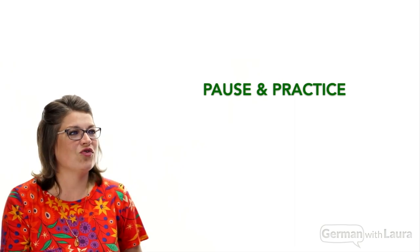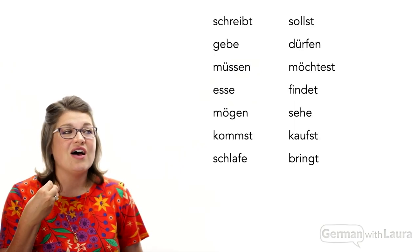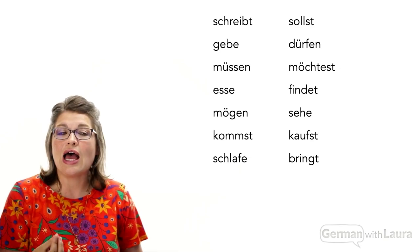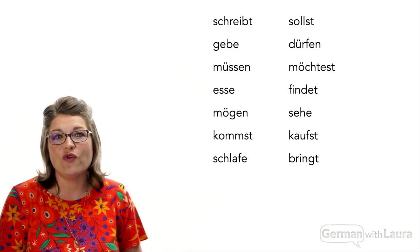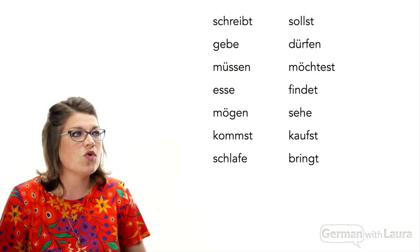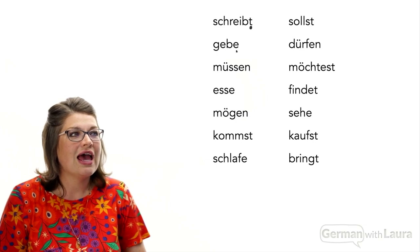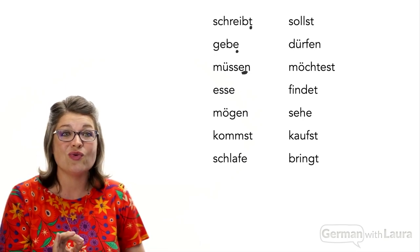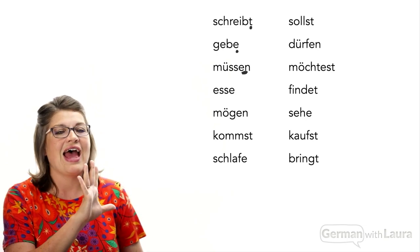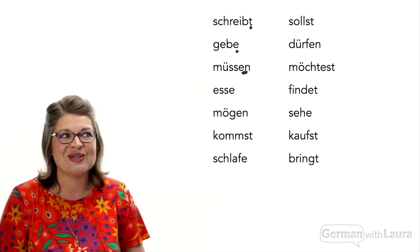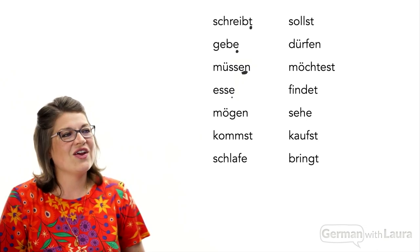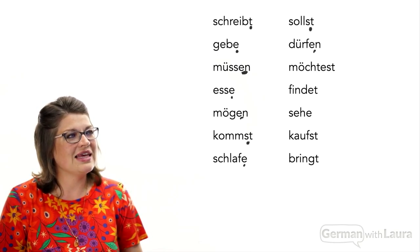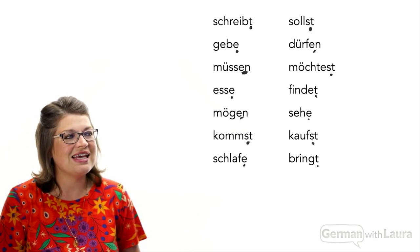Now let's pause and practice. Here are some conjugated forms of common verbs — identify which of the four conjugations are at play. For example, we have a -t conjugation here, an -e conjugation here, an -en — pause the video, write this out and do it manually if you can, then press play and we'll go through the answers together. The answers are: e, en, st, e, st, en, st, t, e, st, and t.